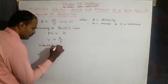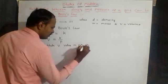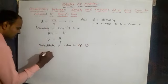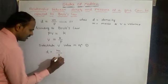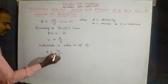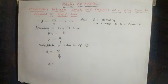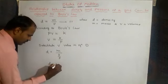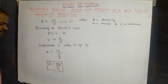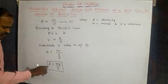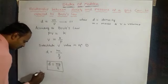Now substitute the value of v into equation one. d = m divided by v, and v = k/p, so d = m divided by (k/p), which gives d = mp/k. The final conclusion is that d is proportional to p.